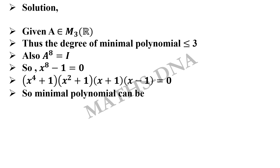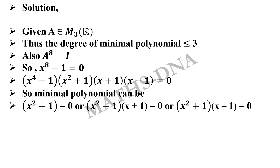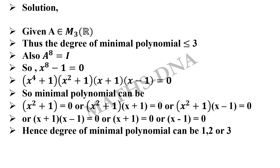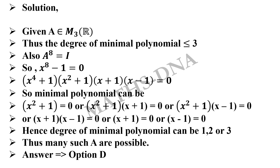We just simplified that term. Now there are different options for the minimal polynomial, such as: x^2 + 1 = 0, or (x^2 + 1)(x + 1) = 0, or (x^2 + 1)(x - 1) = 0, or (x + 1)(x - 1) = 0, or x + 1 = 0, or x - 1 = 0. Here, x^4 + 1 cannot be a minimal polynomial as the degree must be less than or equal to 3. We can have minimal polynomials of degree 1, 2, and 3. So options A and B are not correct. And since we can get many such matrices, option C is also not possible. Thus, the correct answer is option D — there are uncountably many such matrices.